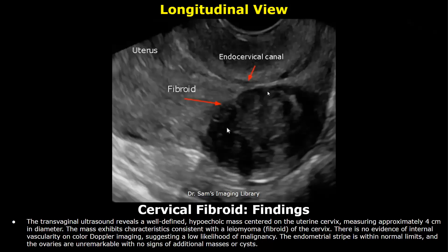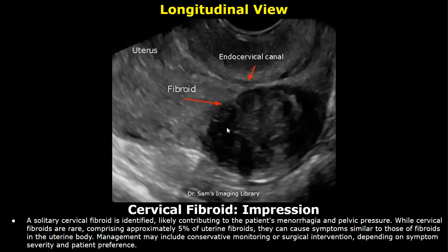The mass exhibits characteristics consistent with a leiomyoma — that is, a fibroid of the cervix. There is no evidence of internal vascularity on color Doppler imaging, suggesting a low likelihood of malignancy. The endometrial stripe is within normal limits and the ovaries are unremarkable with no signs of additional masses or cysts.